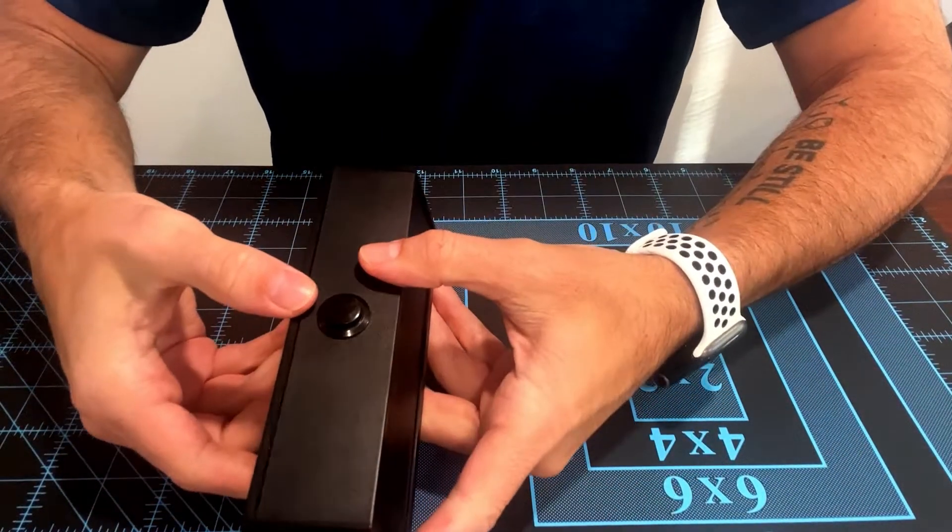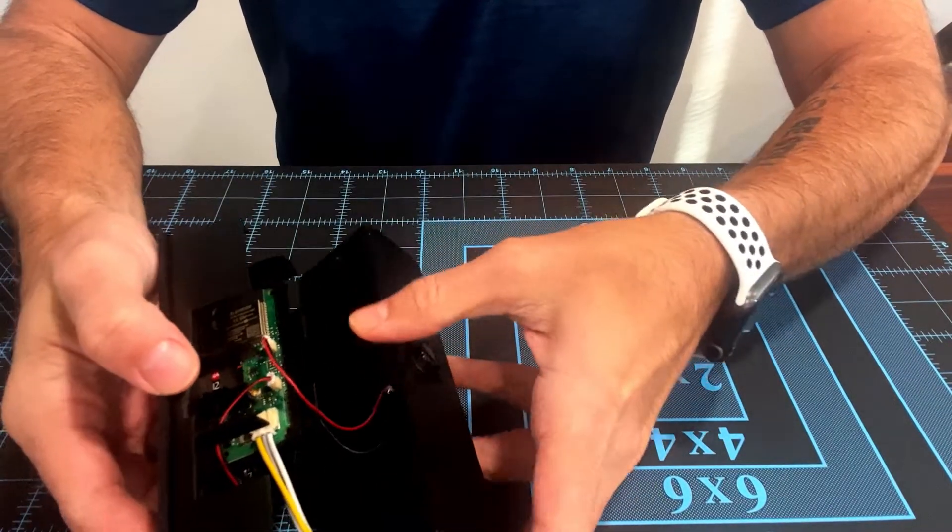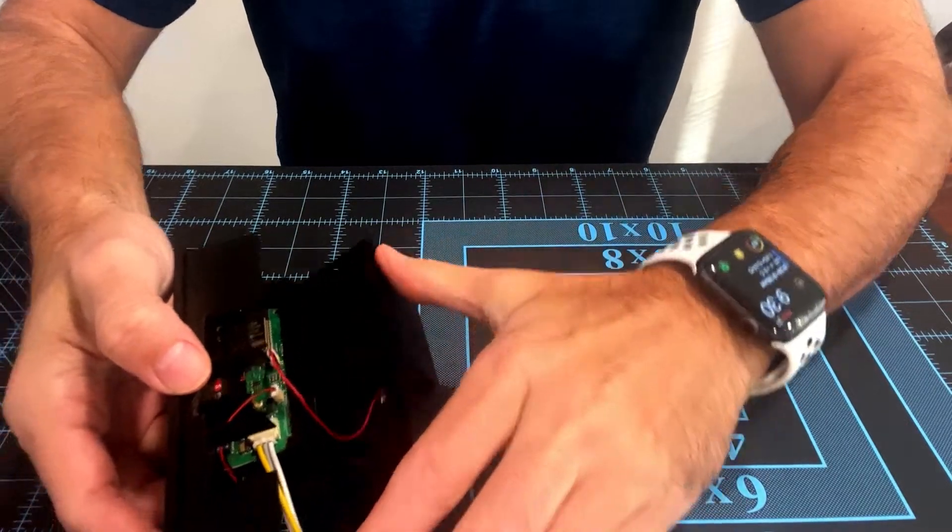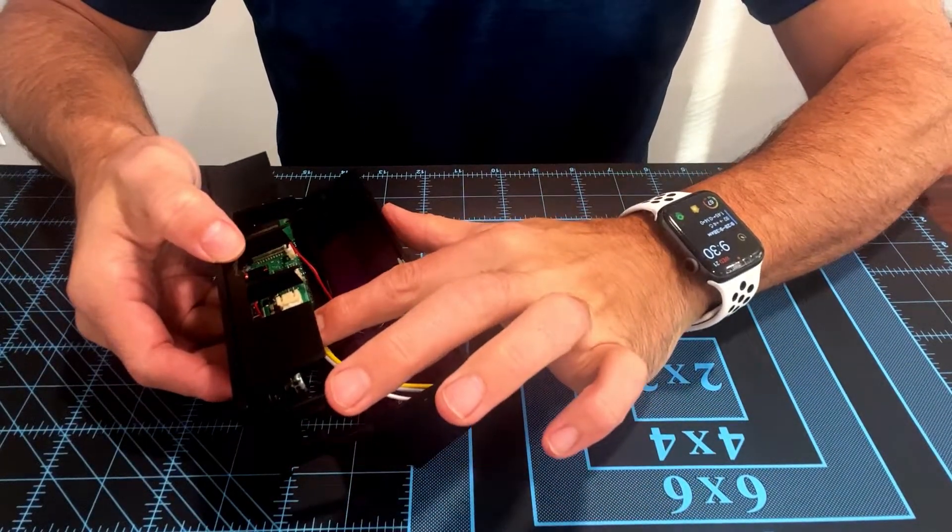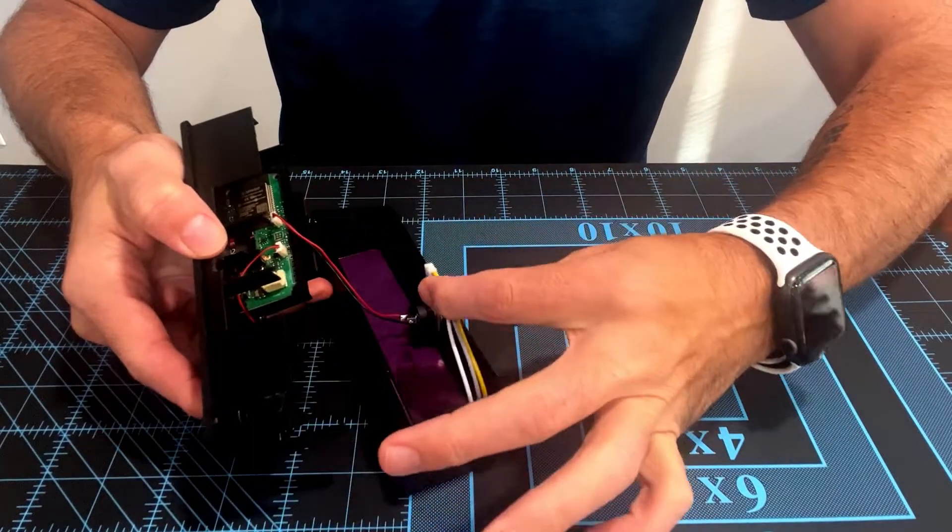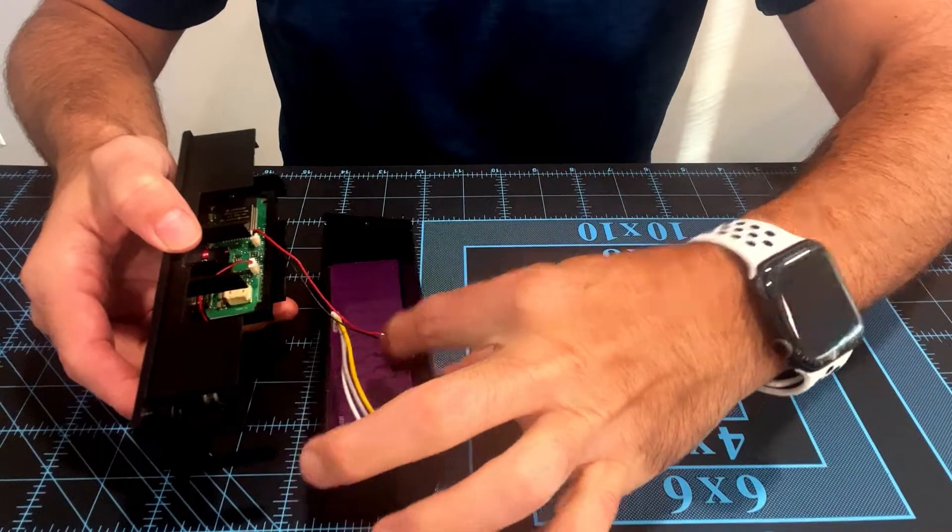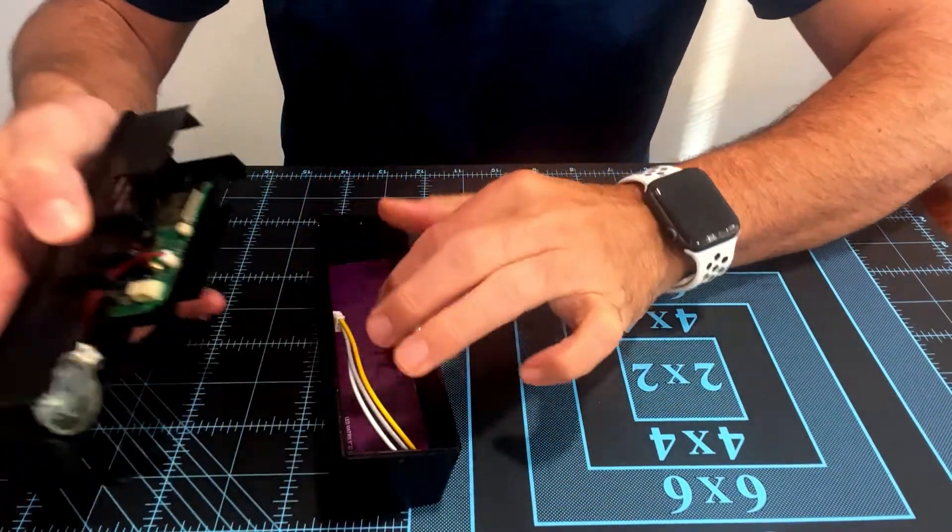Gently slide the back cover out. You're going to see a lot of connections from the front to the back. The yellow, white, and gray wire is the LED; you can simply pull on it to disconnect it. Then you have a black and red wire coming from the button, and you can pull up on that to disconnect it.